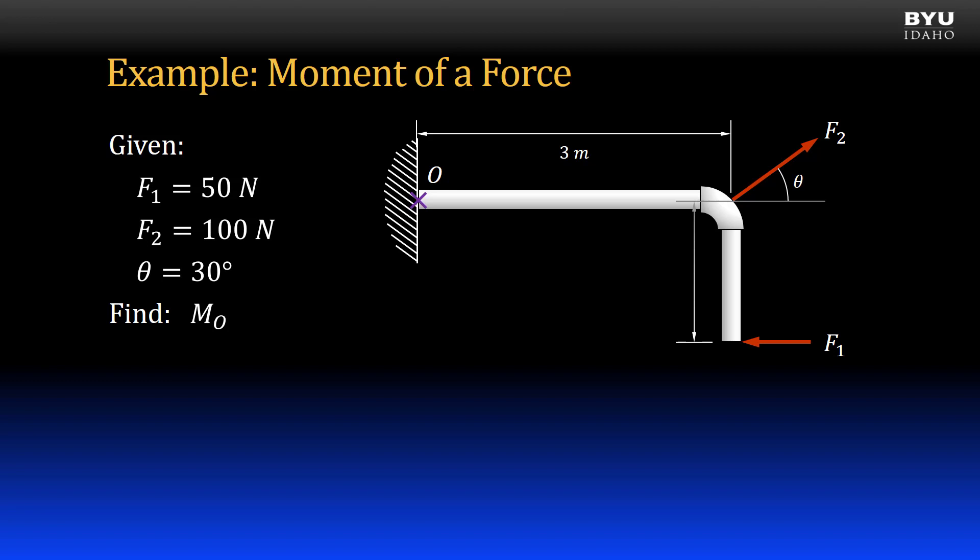Two forces, F1 and F2, act on the pipe. Their magnitudes, positions, and orientations relative to point O are provided. We are to find the moment they cause about point O.